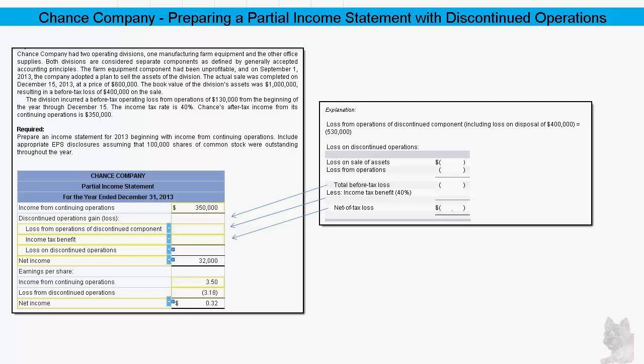The actual sale was completed on December 15th, 2013, at a price of $600,000. The book value of the division's assets was $1 million, resulting in a before-tax loss of $400,000 on the sale. The division also incurred a before-tax operating loss from operations of $130,000 from the beginning of the year through December 15th.